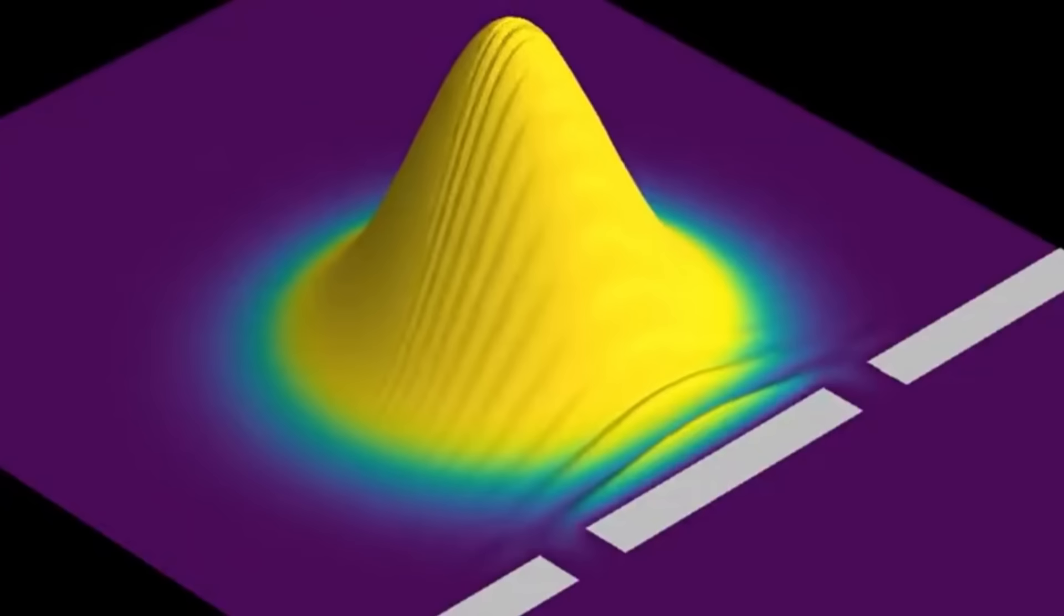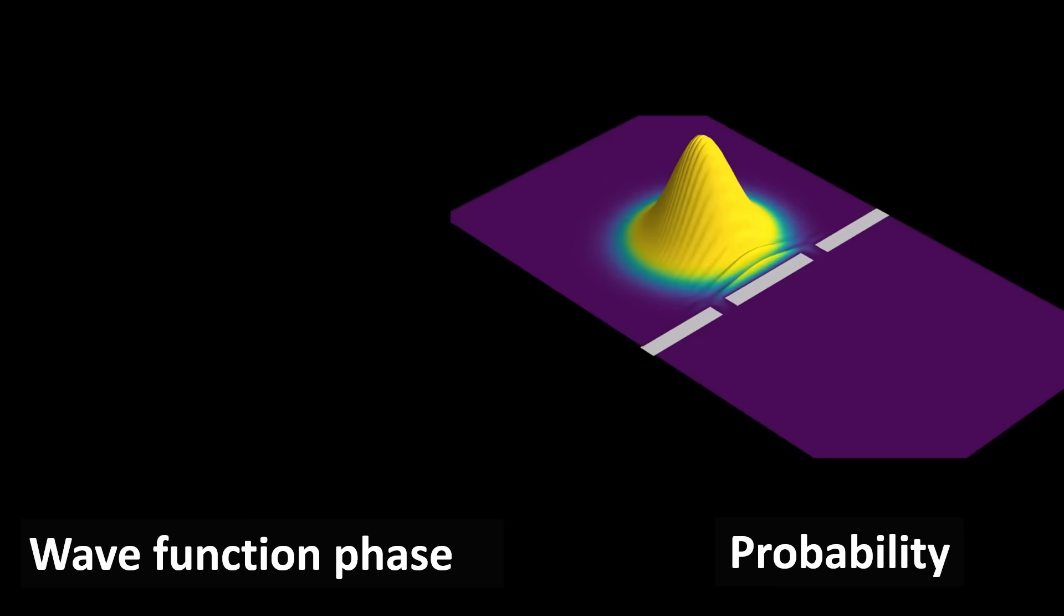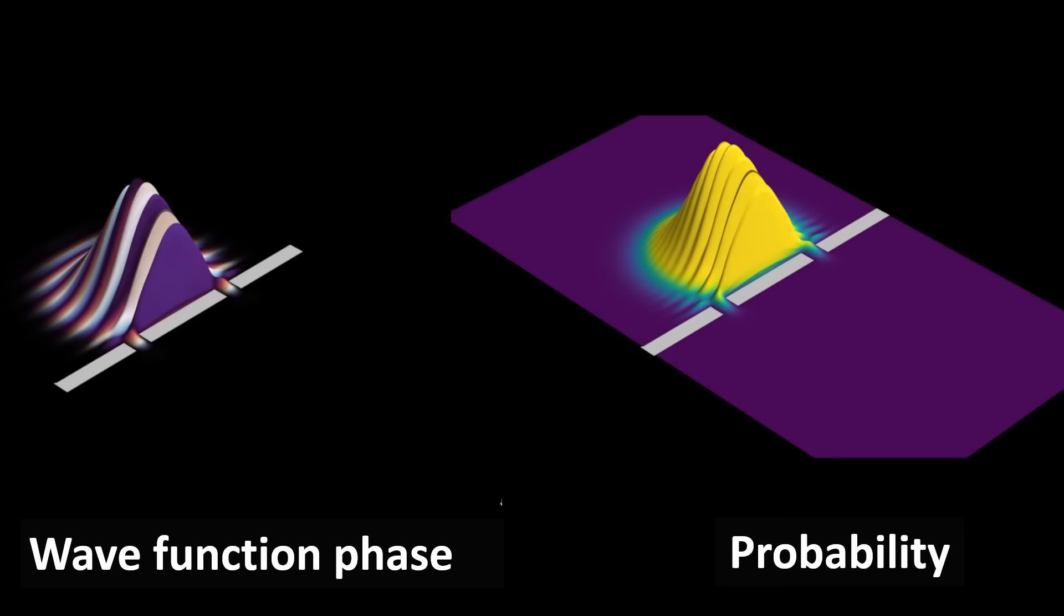In this 2D representation, we start out by placing a quantum particle in a particular location with some momentum. On the left you see a graphic of the wave function, with the phase of the wave represented as a color palette.